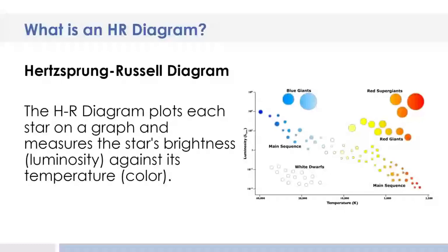What it does is it plots every star on a graph and measures the star's brightness, also called luminosity, against its temperature, which will align with its color. Go ahead and pause the video right now to write down what an HR diagram is and maybe sketch out a very simple one.